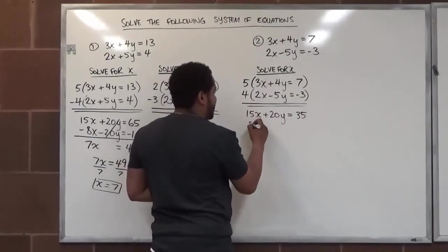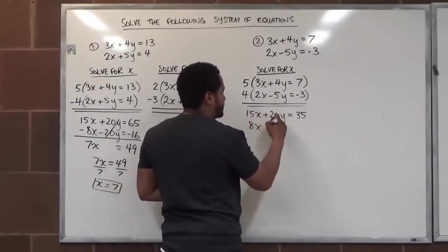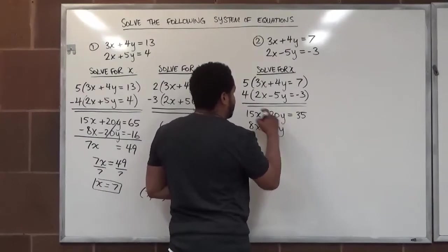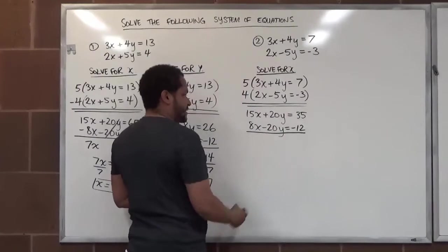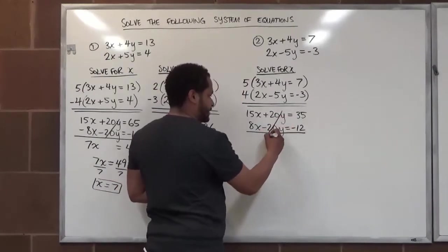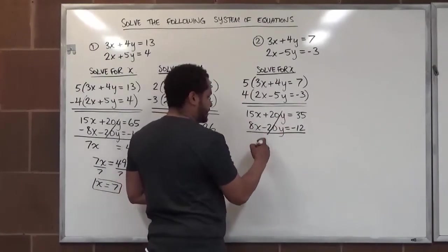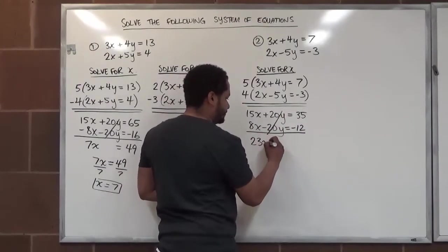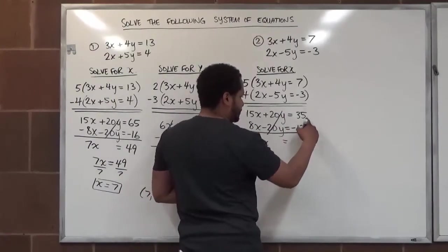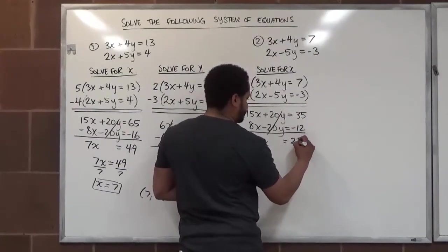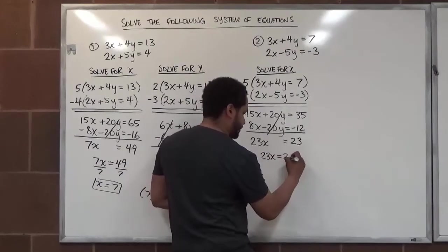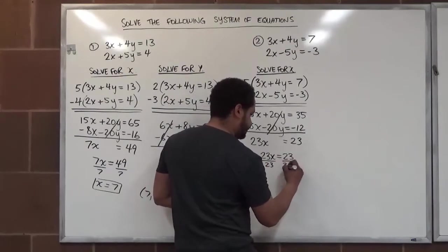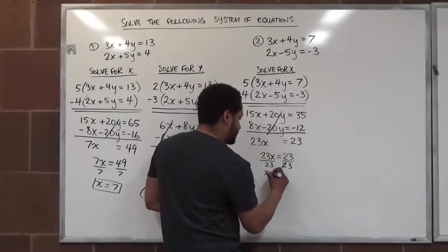The second line gives 8x, negative 20y, and negative 12. Adding the two lines: the y's cancel. 15x plus 8x is 23x, which equals 23. Dividing both sides by 23, we get x equals 1.